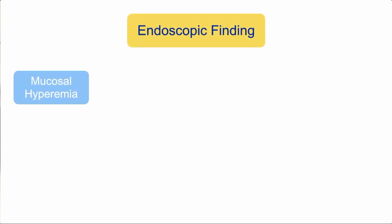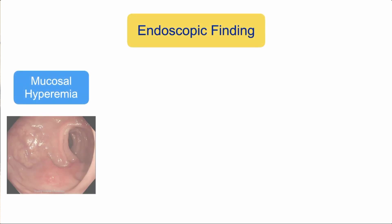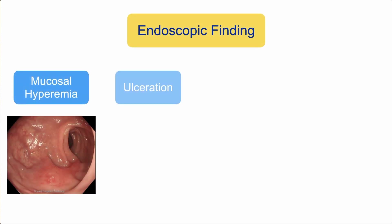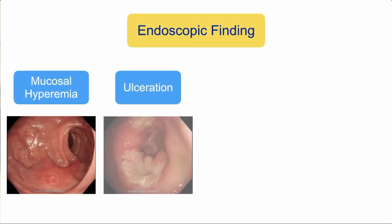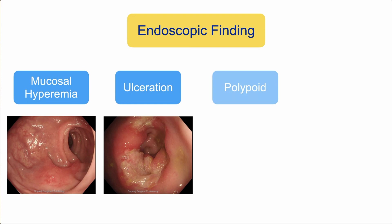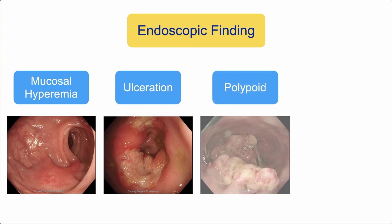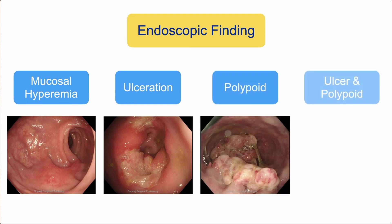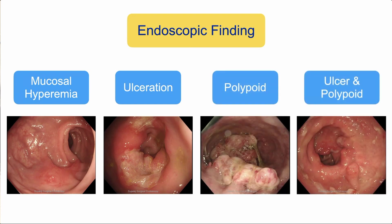Regarding endoscopic findings, we have four types for solitary rectal ulcer syndrome: mucosal hyperemia, ulceration, polypoid, and also the mixed type of ulcer and polypoid.